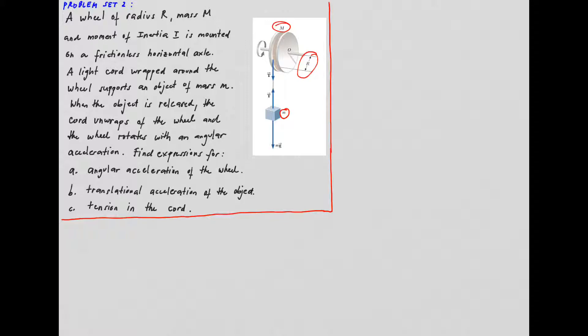Find expressions for letter A, angular acceleration of the wheel; B, translational acceleration of the object; and C, the tension in the cord.